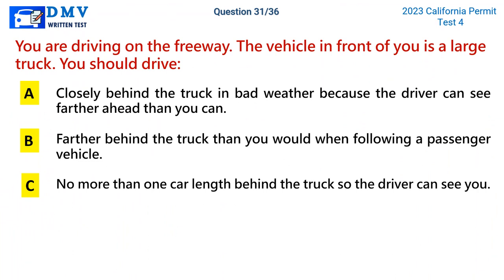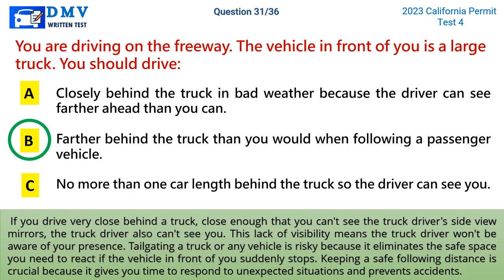Question 31: You are driving on the freeway and the vehicle in front of you is a large truck. You should drive. A) closely behind the truck in bad weather because the driver can see farther ahead, B) farther behind the truck than you would when following a passenger vehicle, C) no more than one car length behind the truck so the driver can see you. The correct answer is B. If you drive so close behind a truck that you can't see the driver's side view mirrors, the truck driver also can't see you. Tailgating eliminates the safe space needed to react if the vehicle suddenly stops, so maintaining a safe following distance is crucial.